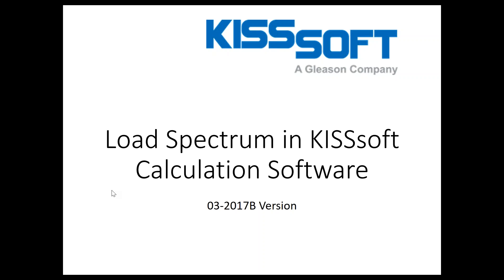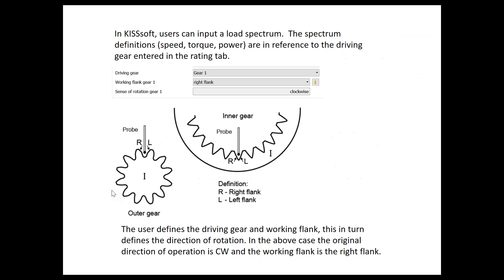First of all, we need to understand that users can input a load spectrum, and the spectrum definition — speed, torque, power — are in reference to the driving gear entered in the rating tab. If you open the rating tab, you can see you have a driving gear, the working flank of the gear, and the sense of rotation. In this case, the right flank is the working flank and the rotation is clockwise.